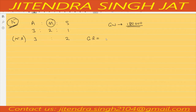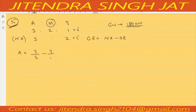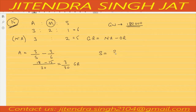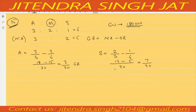We need to calculate gaining ratio using formula: new ratio minus old ratio. For Aparna: new ratio is 3/5, old ratio is 3/6. Taking LCM 30: (6×3=18) minus (5×3=15) = 3/30. For Sonia: new ratio is 2/5, old ratio is 1/6. Taking LCM 30: (6×2=12) minus (5×1=5) = 7/30. So gaining ratio is 3:7.